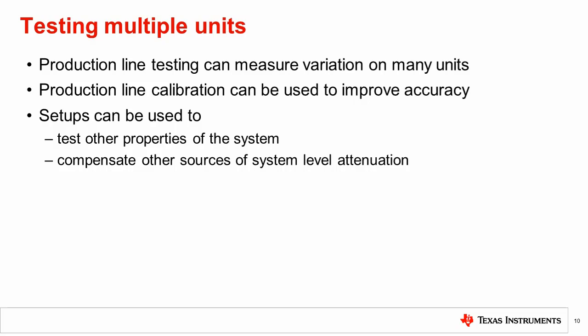Compensating for dark glass has been the focus of this video. However, the test setup outlined in this and the previous video can be used to test a number of properties of the system with dark glass, such as impact to field of view and light source variation, as mentioned in the previous video. The compensation setup described in this video can also be used to compensate for attenuation caused by many system level components, such as cutouts or windows in the casing and other optical components in the system.